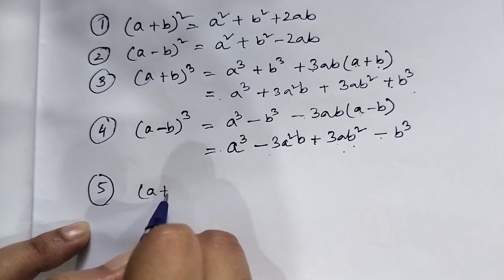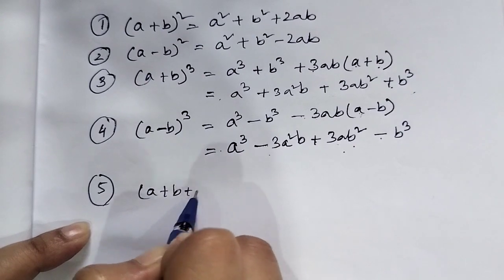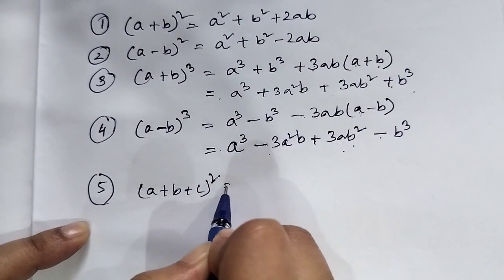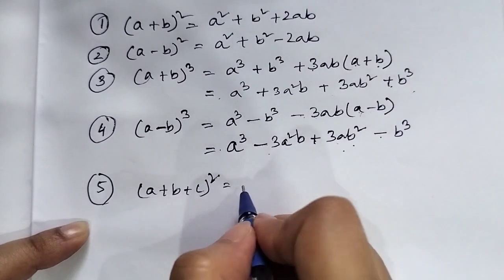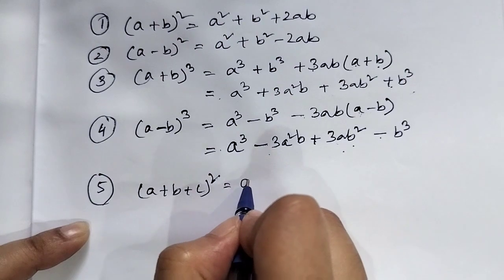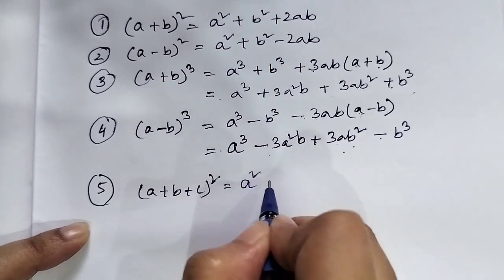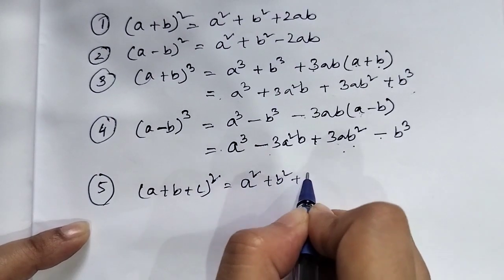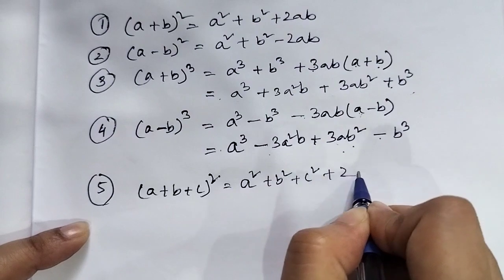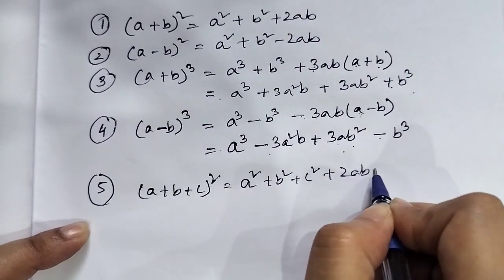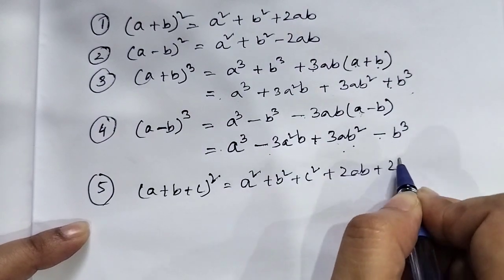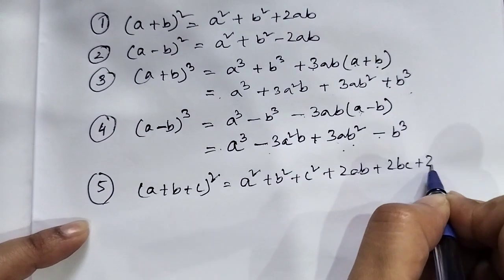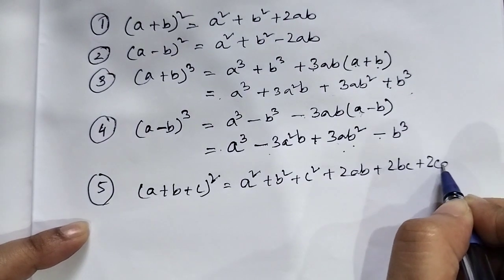a plus b plus c whole square formula: a square plus b square plus c square plus 2ab plus 2bc plus 2ca.